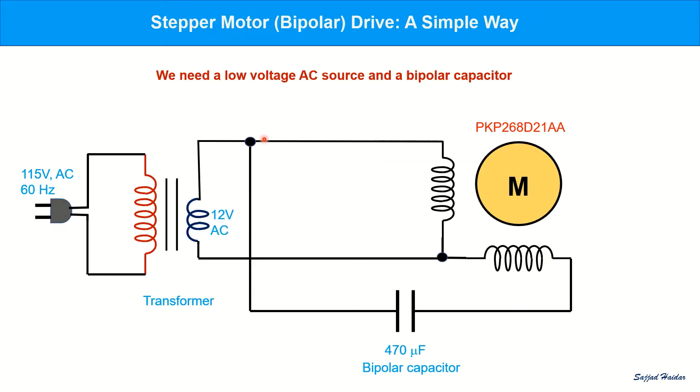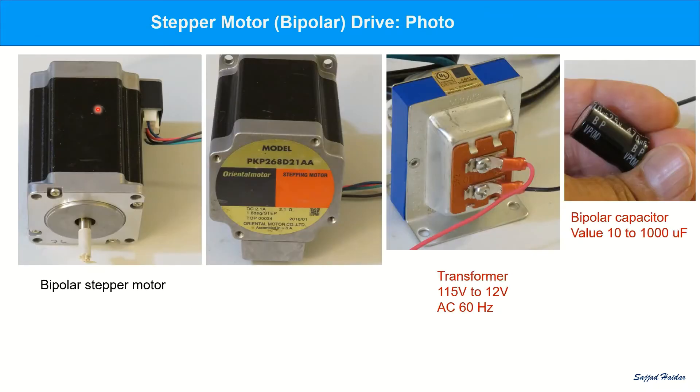In this simple drive project, I use a stepper motor. The model number is shown here, a bipolar capacitor that is 470 microfarad and a low voltage AC source is obtained using a transformer, 115 volt 60 Hz AC to 12 volt AC. The parts are shown here. Here is the stepper motor, the transformer and the bipolar capacitor.